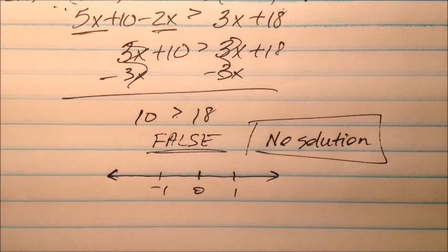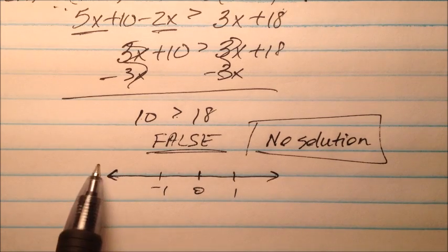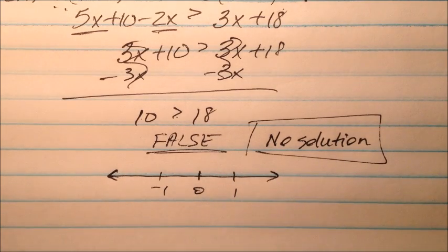Well, I can't shade anything because it's no solution. So in this case, I'm just going to have an empty number line because there's no values that will make it true. So I shade nothing.